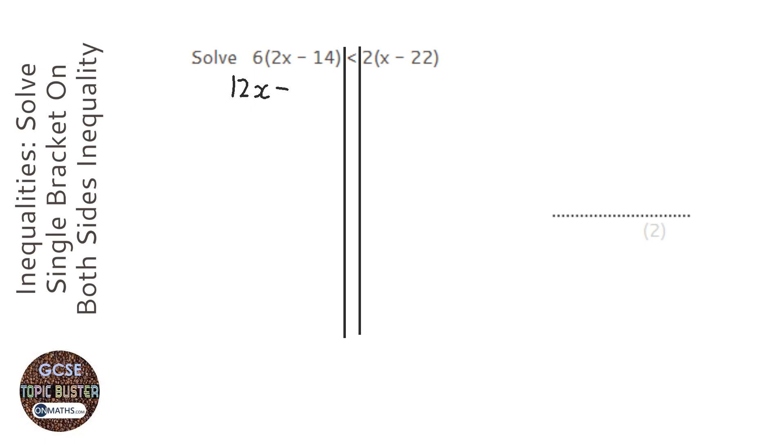Is it 60 plus 24? So that'd be 84, is less than 2x minus 44. And now whenever you've got x on both sides, you choose the side with a smaller amount of x's, which is this one, and take it away.